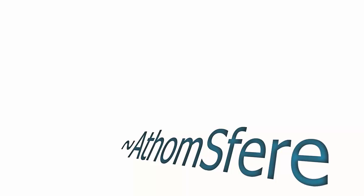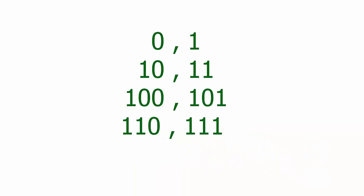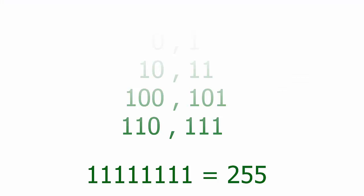One popular base that computer geeks and computers supposedly speak in is binary. With binary you've got a max of 2 values per place in your numbers. So 0, 1 — you've reached the top of your base, then you shift left: 10 for 2, 11 for 3, 100 for 4, and it keeps going that way until you reach what we in the computer field call a byte, which is 8 places.